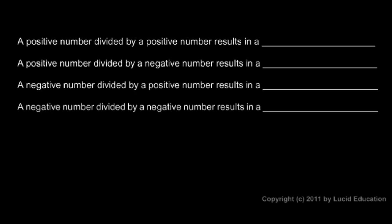Now we'll talk about dividing integers, specifically dividing numbers that are both positive or negative numbers. We have some rules to work with that are similar to the rules we used when multiplying integers. A positive number divided by a positive number results in a positive number, and a positive number divided by a negative number results in a negative number.